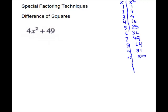For our next problem, it is two terms. What you have to watch out for here — it is plus. So you would have to use like signs, and like signs would not make the middle cancel out. Our only other choice on a problem like this would be to do a GCF. There is no GCF, so our answer is: this one is prime.